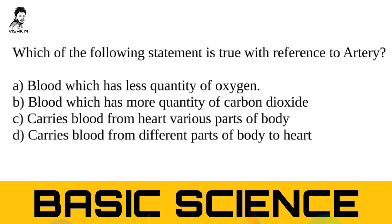Next question: which of the following statements is true with reference to the artery? Option A: blood which has less quantity of oxygen. Option B: blood which has more quantity of carbon dioxide. Option C: carries blood from the heart to various parts of the body. Option D: carries blood from different parts of the body to the heart. The right answer is option C. Keep in mind — arteries carry blood away from the heart. Pulmonary arteries transport blood that has low oxygen content from the right ventricle to the lungs.